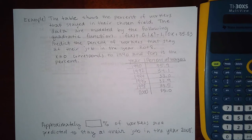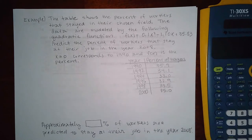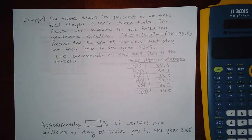Okay, so here are the last few examples. These are very similar to the ones inside your homework, so they are additional to what Pearson is giving me for the notes. This one says the table shows the percent of workers that stayed in their chosen field. The data are modeled by the following quadratic function.